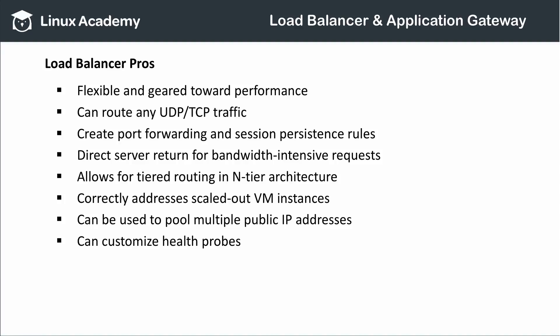When properly designed and configured, this should ensure maximum performance, especially if the load balancer correctly addresses scaled-out virtual machine instances once auto-scaling of the VM set is enabled. Because a single load balancer can handle multiple virtual IP addresses or public IP addresses, I can use a load balancer to host multiple port-listening services across the same set of virtual machines. For example, I could set up a web server farm on five virtual machines and forward each unique IP address to a different port, using those same five VMs to host many different websites on the same hardware.